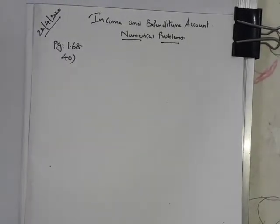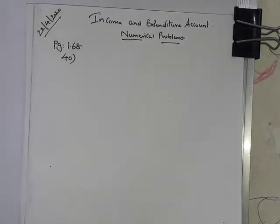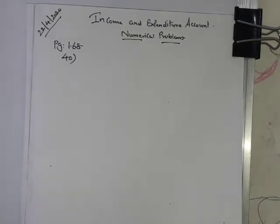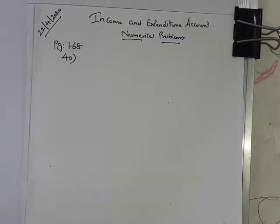The first item is the opening balance of cash. As I already said, income and expenditure account will not have any opening or closing balance of cash or bank at all. So you should not take any opening or closing balance of cash in hand or cash at bank — it's ruled out.